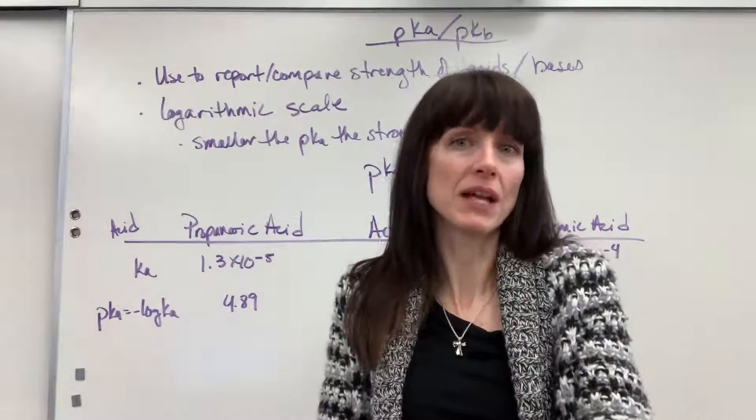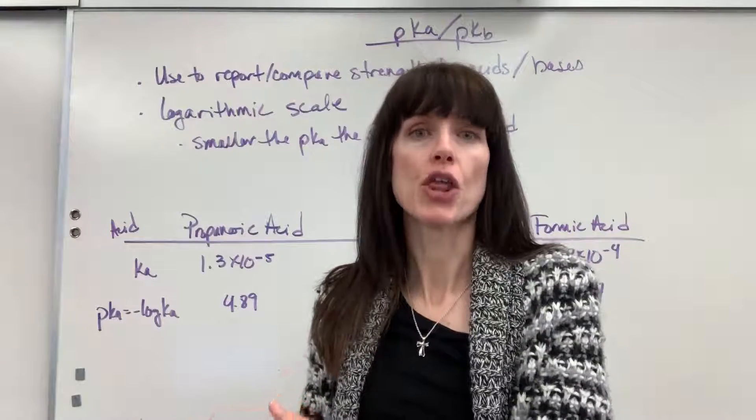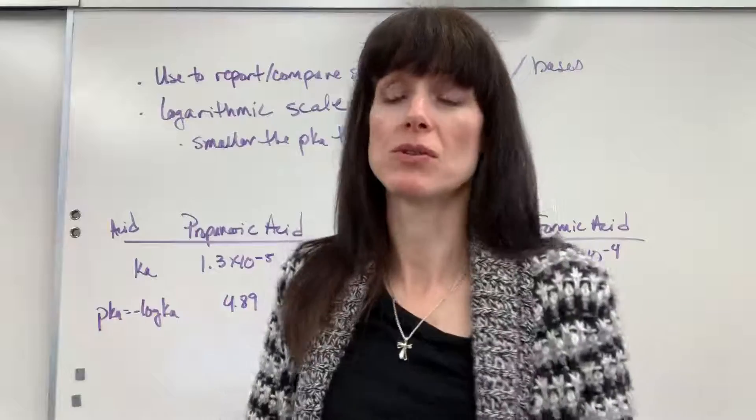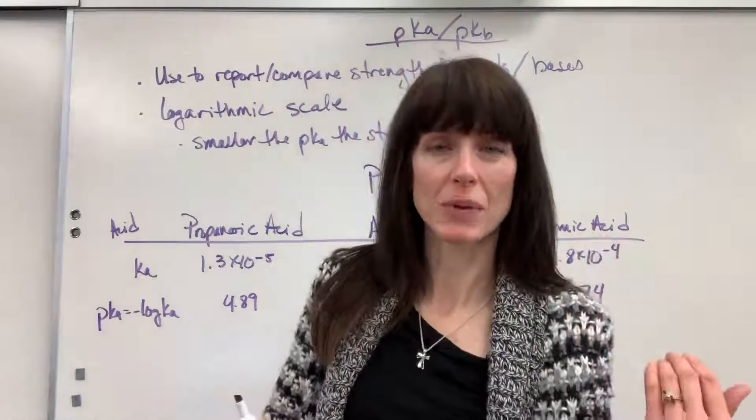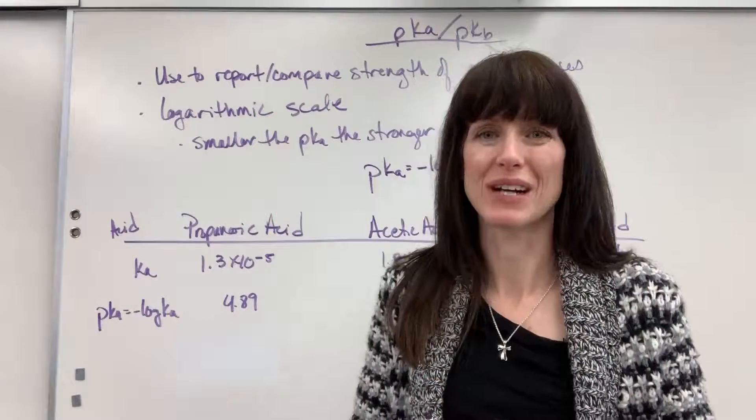Same thing with pH, right? The stronger the acid, the lower the pH. A really strong acid has a pH of one, compared to a weaker acid, might have a pH of four. But the concentration at a pH of one is going to be much higher. So you have to be careful with logarithmic scales that you get that straight.